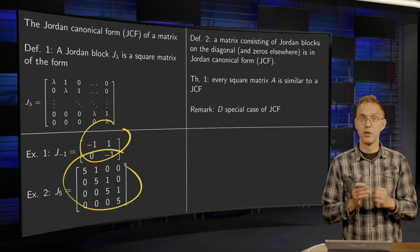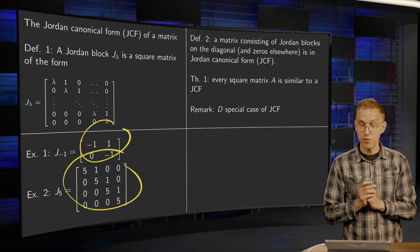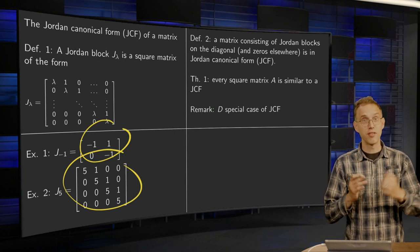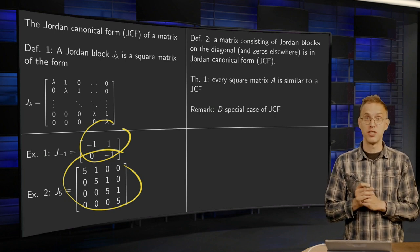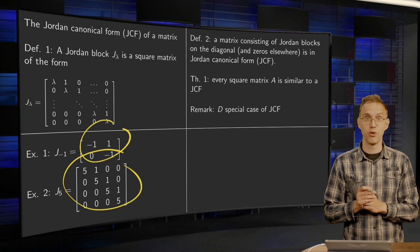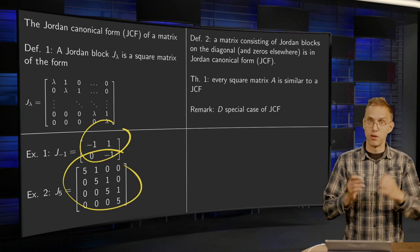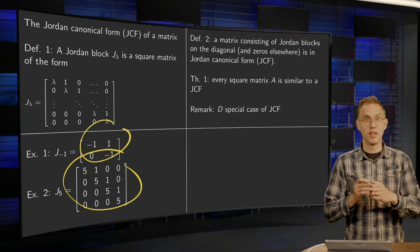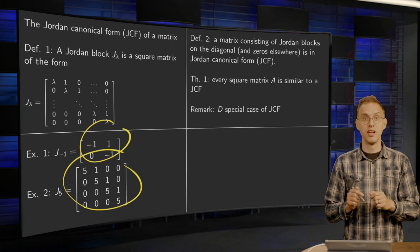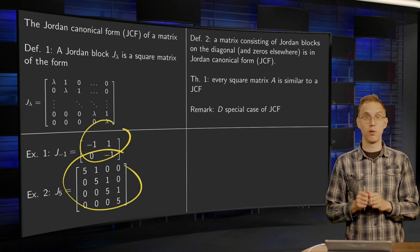And then, Theorem 1, which is pretty difficult to prove by the way, is that every square matrix is in fact similar to a Jordan canonical form. So, small remark: a special case of a Jordan canonical form is if you have only 1x1 Jordan blocks.